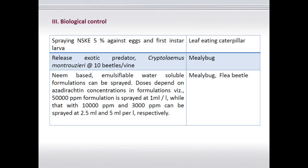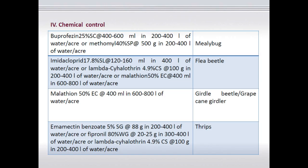Coming to the biological concept, especially for mealybug, Cryptolaemus montrouzieri, a ladybird beetle, has been recommended at the rate of 10 beetles per vine, which effectively takes care of soft-bodied insects. Apart from that, neem-based insecticides like NSKE 5% or commercial neem products can be used against the majority of pests. There are also chemicals which have been recommended against various pests, which have to be employed based on the ETL value.